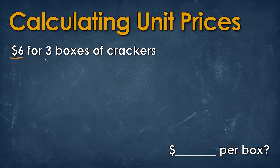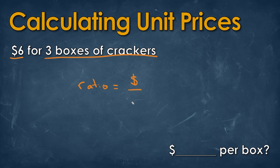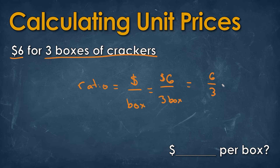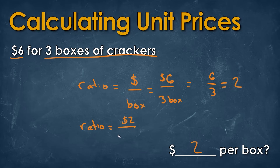We have six dollars for every three boxes of crackers. Whenever we're looking at a ratio or a fraction, we're looking at two different units — in this case, dollars per boxes. So if we know that it is six dollars for every three boxes of crackers, we're just looking at six over three, which simplifies to two. That gives us a rate of two dollars per box of crackers.